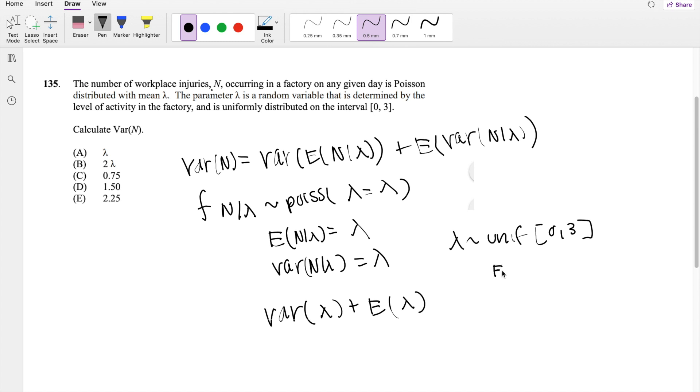So then we know the expectation of lambda is equal to a plus b divided by 2. So in our case, it's going to be 3 plus 0 divided by 2, which is equal to 1.5.